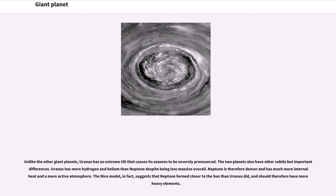Unlike the other giant planets, Uranus has an extreme tilt that causes its seasons to be severely pronounced. The two planets also have other subtle but important differences. Uranus has more hydrogen and helium than Neptune despite being less massive overall. Neptune is therefore denser and has much more internal heat and a more active atmosphere. The Nice model, in fact, suggests that Neptune formed closer to the Sun than Uranus did, and should therefore have more heavy elements.